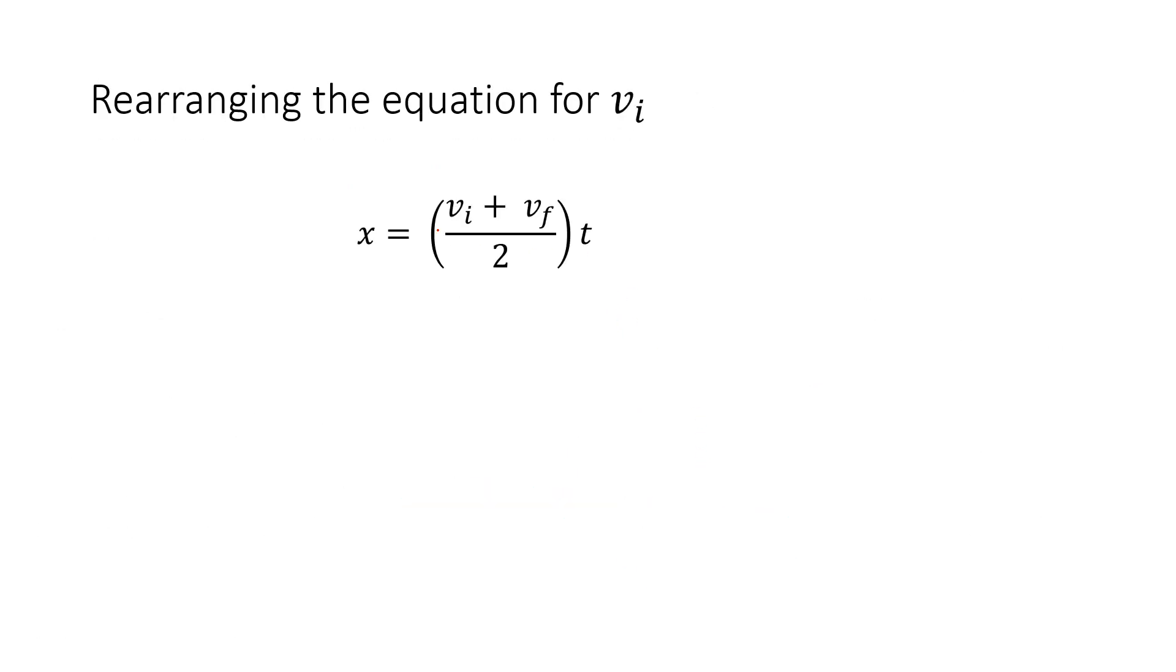Let's rearrange this equation. If I'm rearranging for vi, the first thing I'd do is divide out the t from both sides. Then I would multiply out the 2. I have 2x over t equals vi plus vf. At that point, I subtract the variable I don't want. So minus vf, and it would be 2x over t minus vf equals vi.